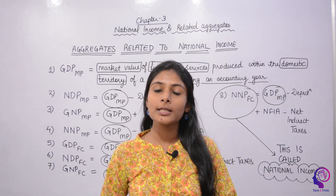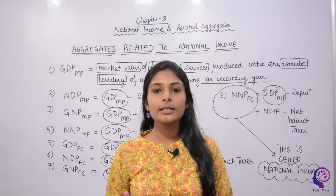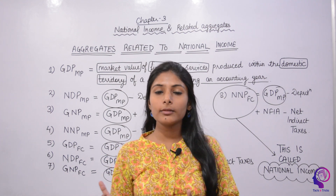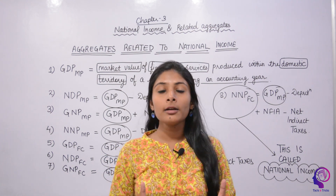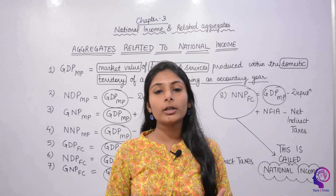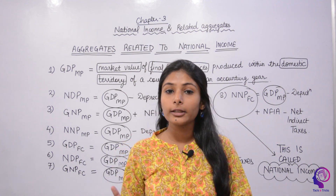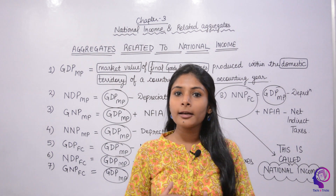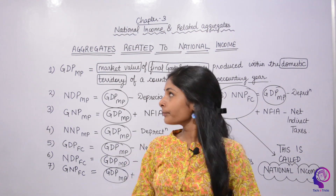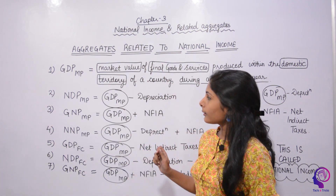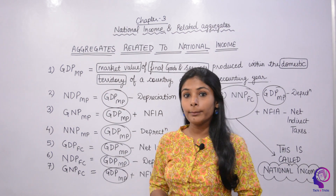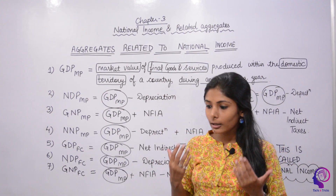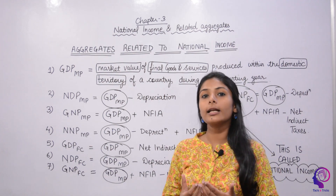Now let's see how we have national income related aggregates. Here I have learned the conversion rules — how to convert from domestic to national, how to convert from gross to net, and how to convert from market price to factor cost.